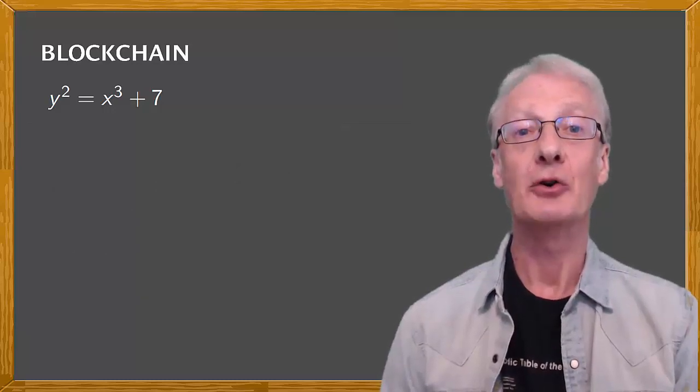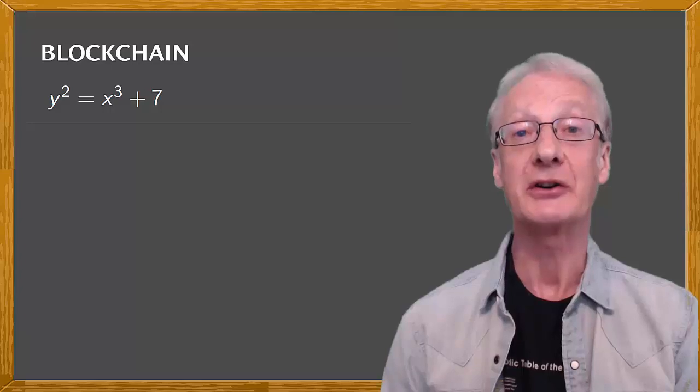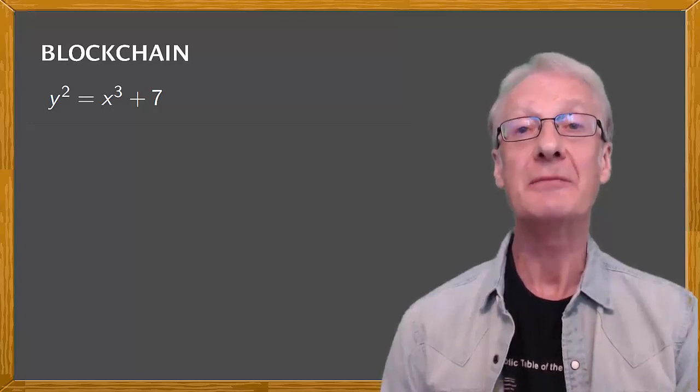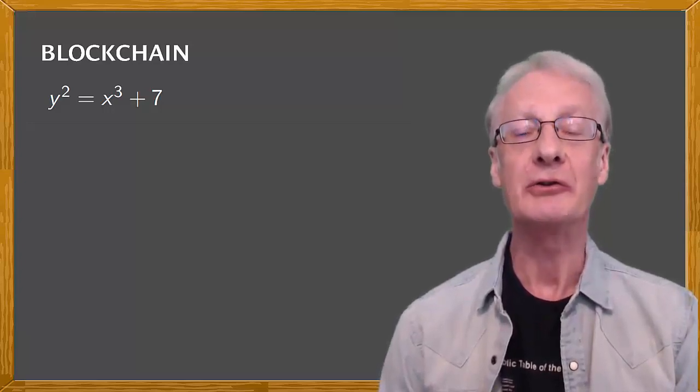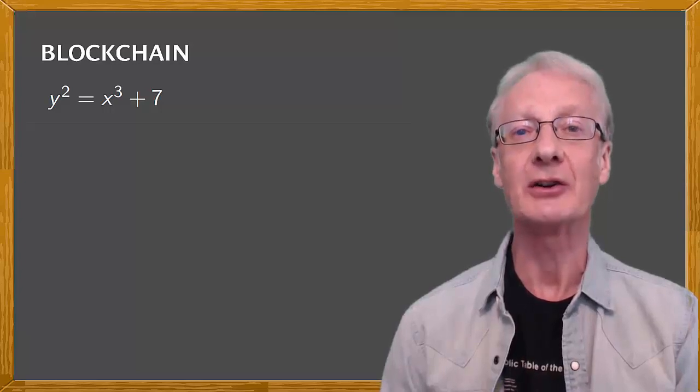Remember, our goal is to obtain a cryptographic algorithm using the elliptic curve. For this, we need a maths process that's easy to compute in one direction, but hard to invert. The one we'll use is called the discrete logarithm. What does that mean?